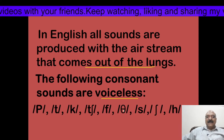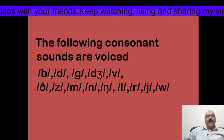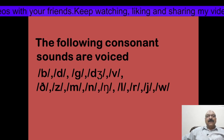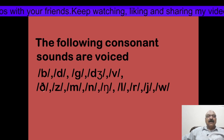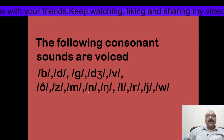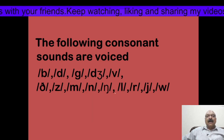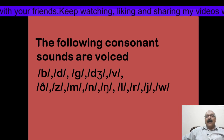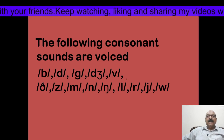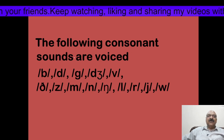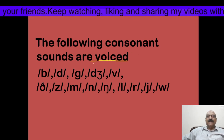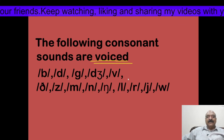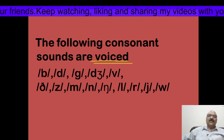But when we produce ba, da, ga, ja, wa, ða, za, ma, na, ng, l, r, y, and wa, the vocal cords vibrate and these consonant sounds are called voiced sounds. So dear students, this is all for the description of consonant and vowel sounds.